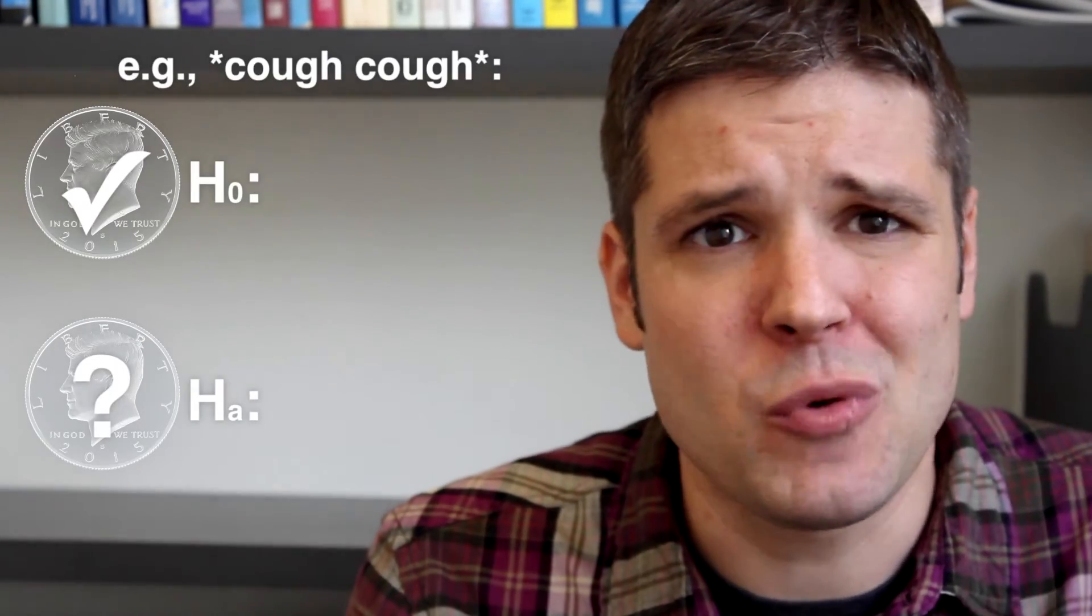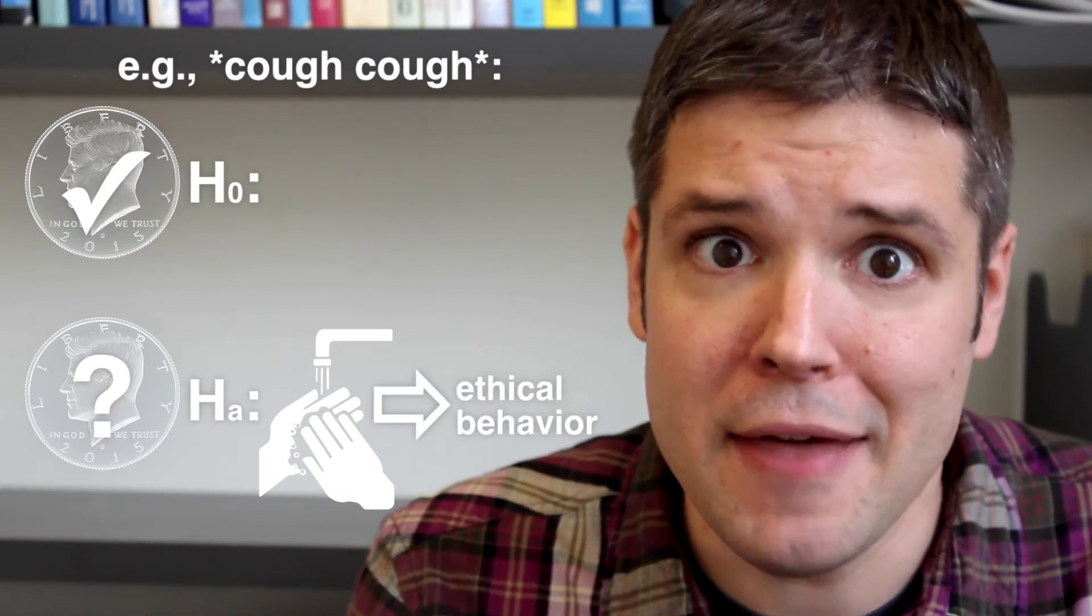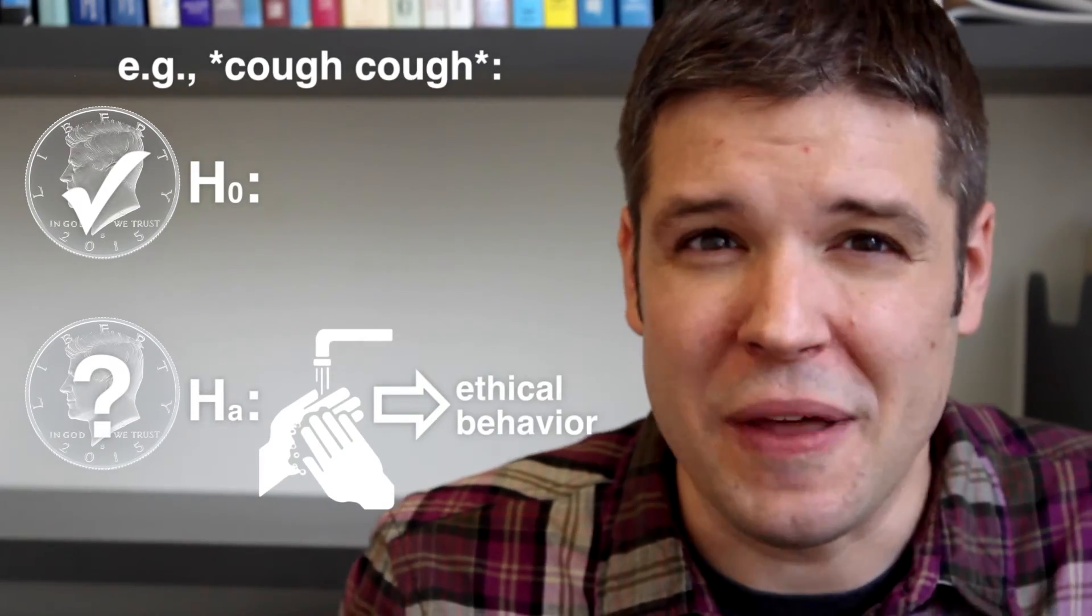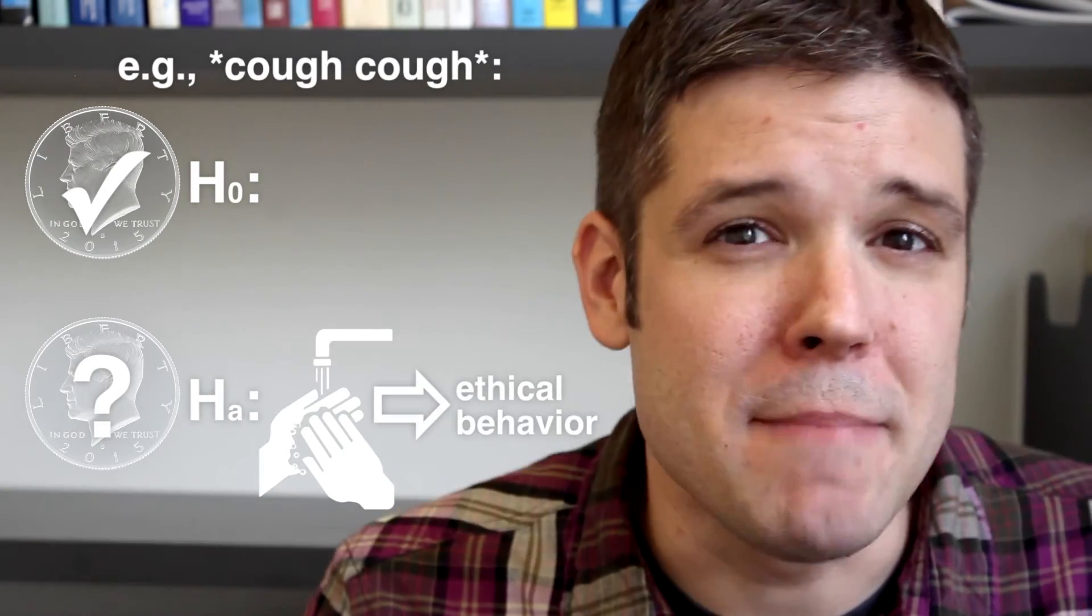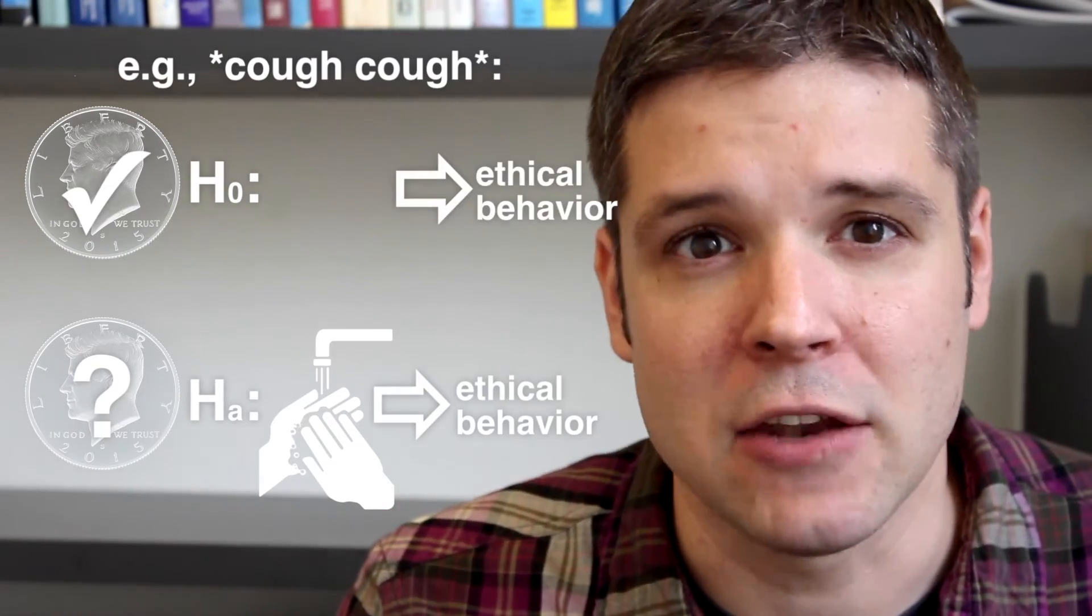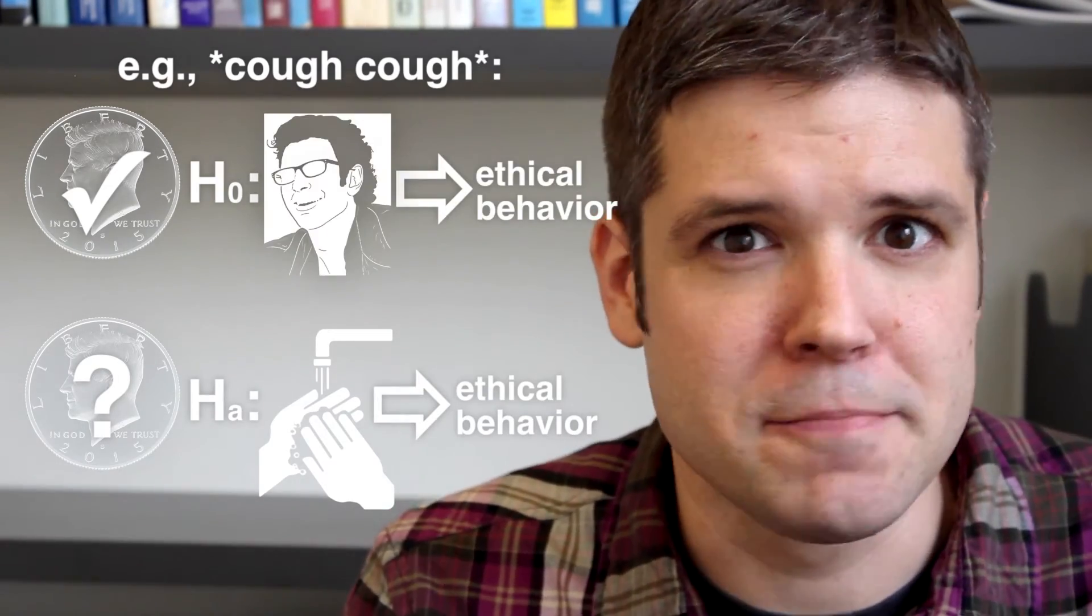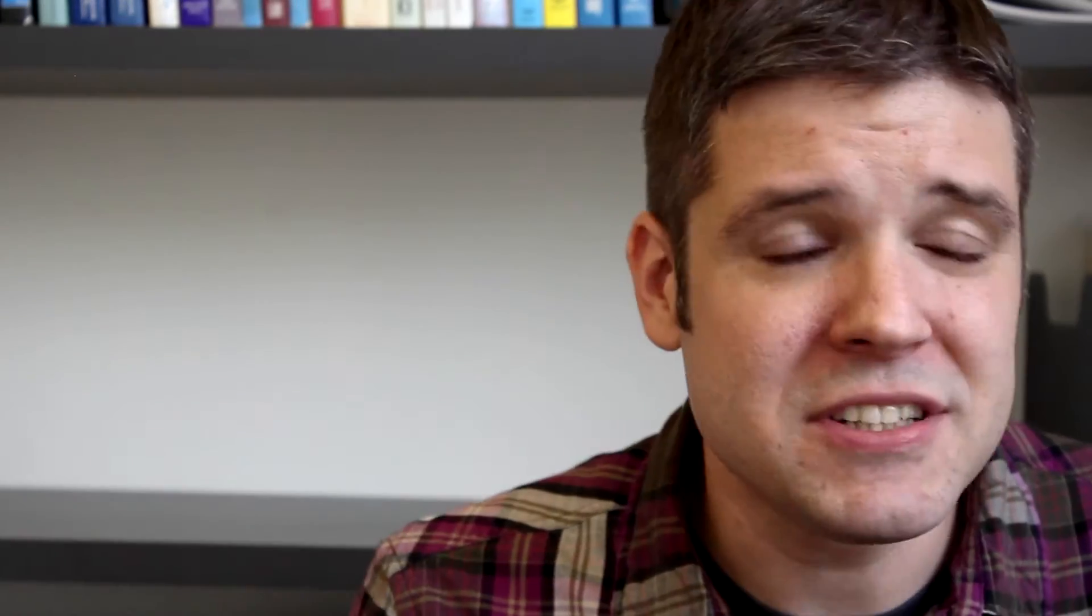This last example with an experimental group and a control looks a little more like what you'd expect if you test humans. Instead of testing the fairness of a coin, you might be testing whether there's a relationship between washing your hands and behaving ethically. Is the outcome related to whether you wash your hands or not? Or did the measured ethical behavior seem to have no relationship to hand washing? Meaning unmeasured factors must have determined the behavior.